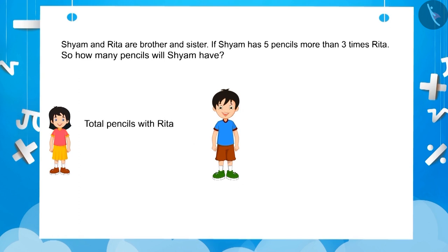Let us assume that the number of pencils with Rita is P. So, the total number of pencils with Shyam will be 3 multiplied by P plus 5, which equals 3P plus 5. In this expression, P is a variable amount. A variable is an English alphabet in an algebraic expression whose value keeps changing, that is, its value varies.